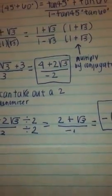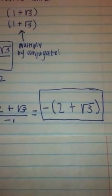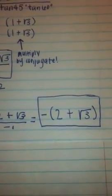So we get 2 plus square root 3 all over negative 1. And we can further simplify it to say negative and then on the inside, 2 plus square root 3. So that's the answer.